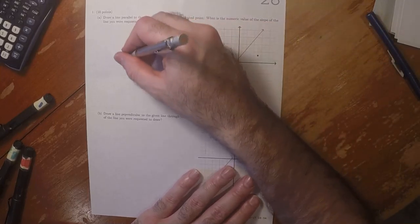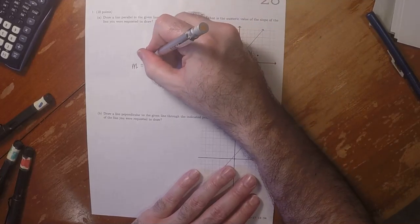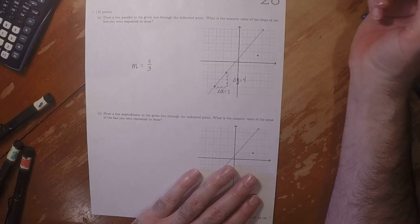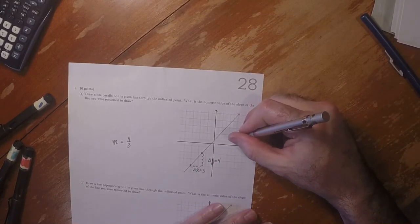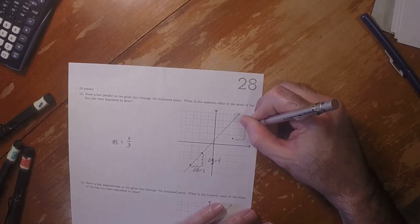So that means the slope of the given line is four over three. And because we want a parallel line, that's also the slope of the parallel line. So, one, two, three. One, two, three, four.